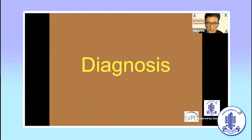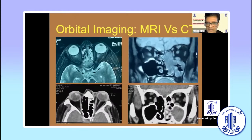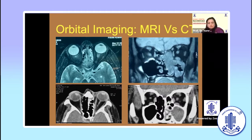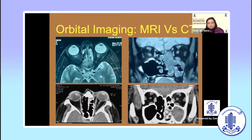Once you have a clinical suspicion based on these findings, you need to do imaging. Between MRI and CT, MRI is more accurate in diagnosing the extent of this disease — preferably a contrast-enhanced MRI. However, many of these patients may have renal issues and doing an MRI is not always feasible, so a CT scan may be acceptable rather than doing nothing at all.